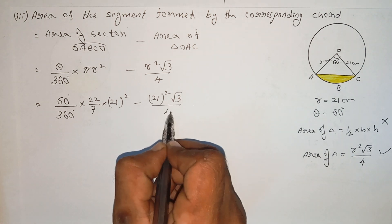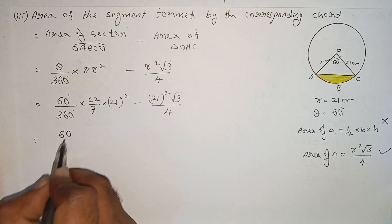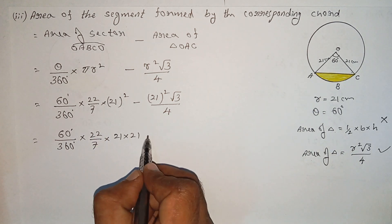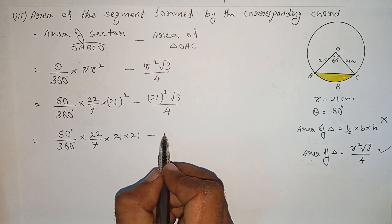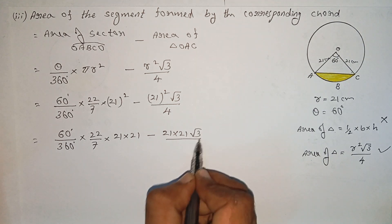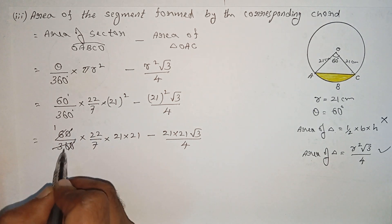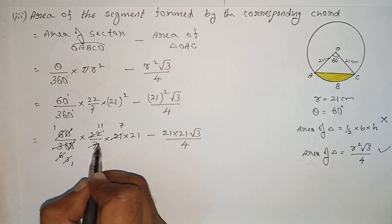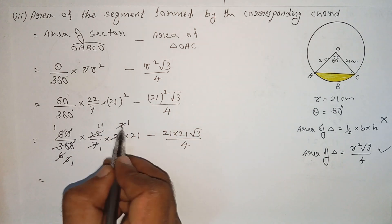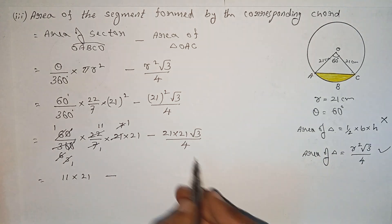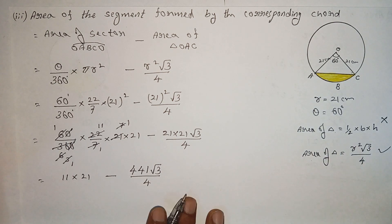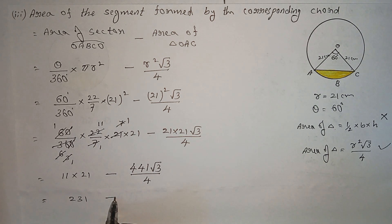Simplifying: 60 over 360 into 22 by 7 into 21 squared, minus 21 squared root 3 by 4. Cancelling 7 with 21: 11 into 21 minus 21 into 21 root 3 divided by 4. This gives 231 minus the triangle area. The final answer for the area of the segment is approximately 40.27 cm squared.